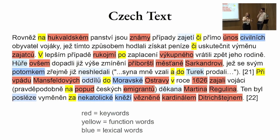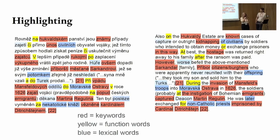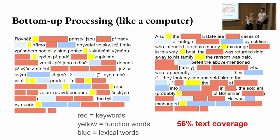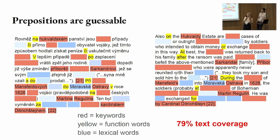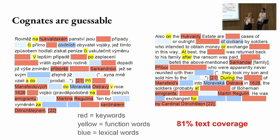So let's try to make it a little bit more legible. Here we have highlighted all of the red words — these are keywords, so these are not very frequently occurring words. The yellow words are function words, and then we have lexical words in blue — those are the ones that I haven't learned yet. If you want to get 95% text coverage, if you're looking at just these highlighted words, it's only 56%. That is not enough. But there are named entities like Mansfeld that I could figure out, which gives us up to 68%. The function words are pretty guessable, which brings us up to 79%. Cognates are also guessable — like 'civilních' meaning 'of civilians' — that's 81% text coverage.